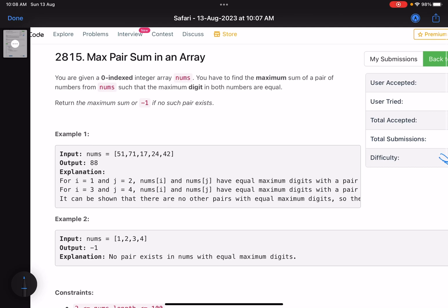Let's see what the problem is asking us to do. The problem is Max Pair Sum in an Array. You are given a zero-indexed integer array nums. You have to find the maximum sum of a pair of numbers from nums such that the maximum digit in both the numbers are equal. Return max sum or return minus one if no such pair exists.